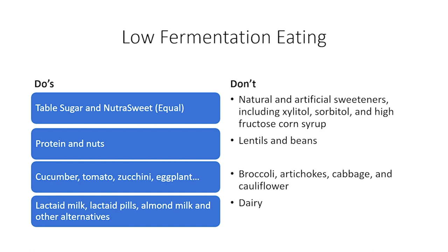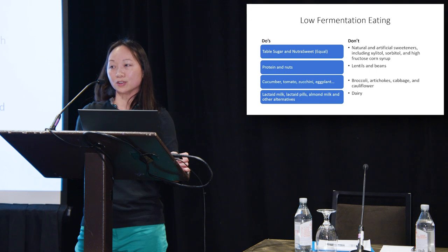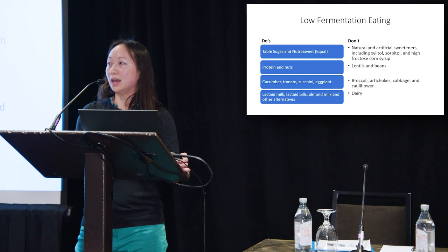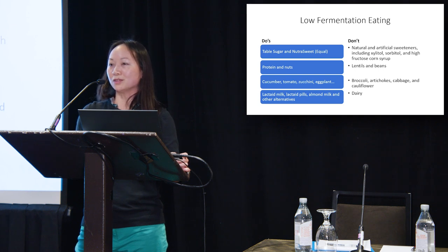There are substitute sugars that can be challenging. While table sugar is acceptable, if patients want a substitute sugar, try to stay with Equal. Proteins and nuts are usually good. For vegetables, cucumber and tomatoes are good options. And milk substitutes like almond milk or oat milk are good choices as well.